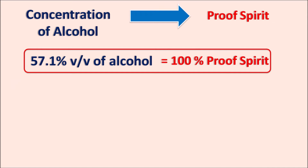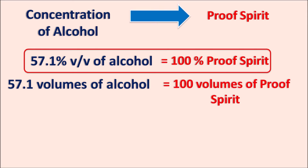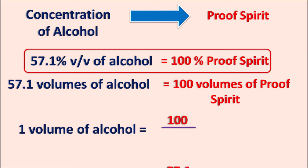This equation indicates that 57.1 volumes of alcohol is equal to 100 volumes of proof spirit. Therefore, one volume of alcohol equals 100 divided by 57.1, which gives a factor of 1.7513. So each volume of alcohol is equal to 1.7513 degrees of proof spirit, and we can use this to easily calculate the proof spirit of a given alcoholic solution.